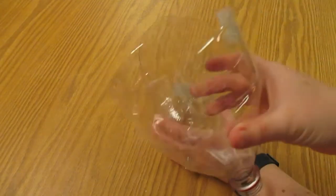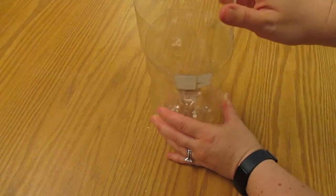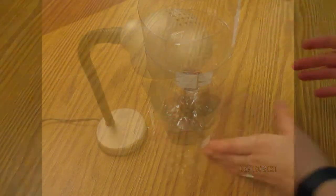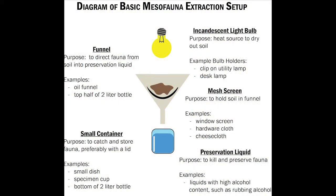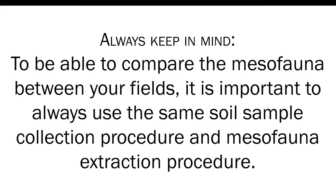An even simpler design uses just a two-liter soda bottle, which I cut to make the funnel and container, a desk lamp, some mesh, and rubbing alcohol. For the sake of monitoring the soil mesofauna on your farm, you can modify this setup based on what supplies you have available, always keeping in mind the five basic components necessary for this type of heat extraction. The main thing to remember is to use the same soil collection and extraction procedure for each of your samples to be able to compare results across fields.